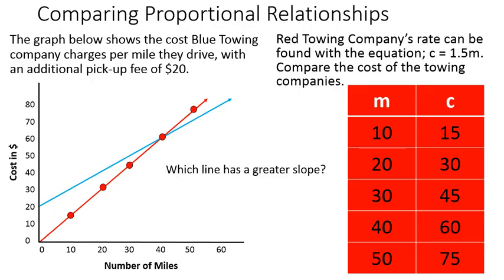Which line has a greater slope? In other words, which line increases more steeply? Well, the red line has a greater slope. It increases more quickly. The blue line starts up higher, but it does not increase as quickly. So red has a greater slope than blue.